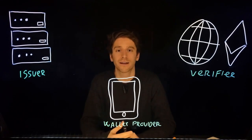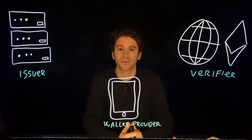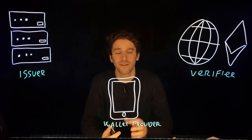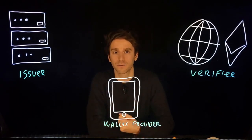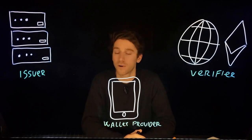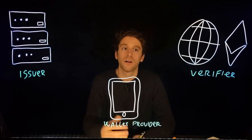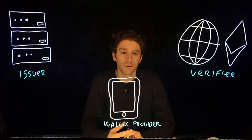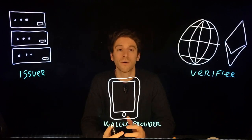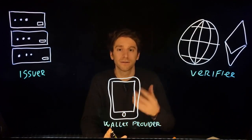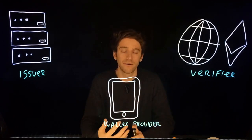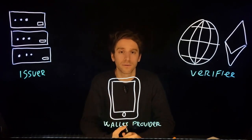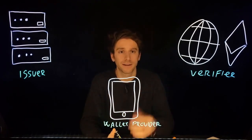The tooling available for issuers is called the Issuer Node, and it is a Docker container that can be run in order to create a self-hosted server. This server will expose all the APIs needed to run an issuer. For example, an issuer can be a university that wants to provide university degree certificates in the form of verifiable credentials, or a DAO that wants to create a membership attestation.